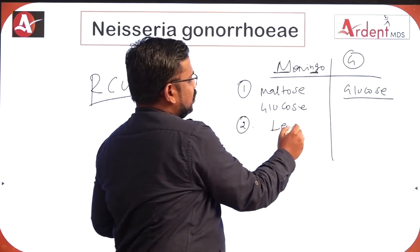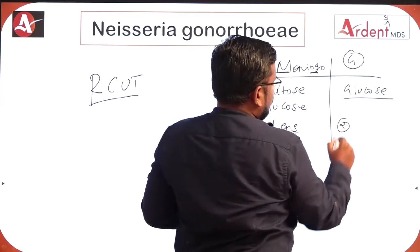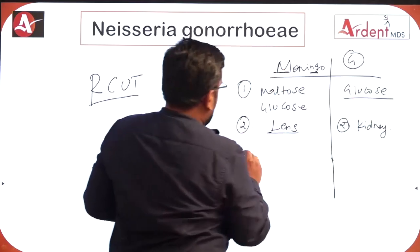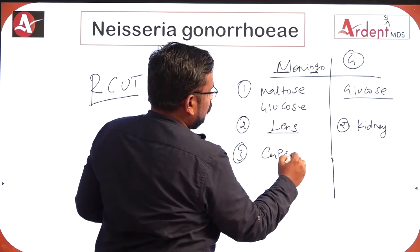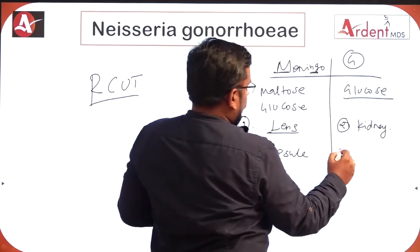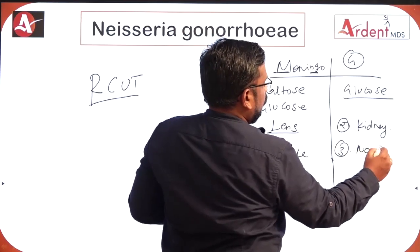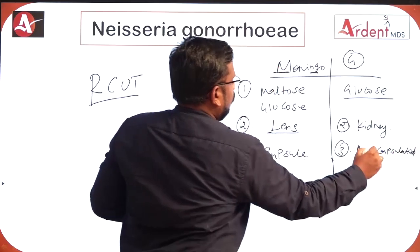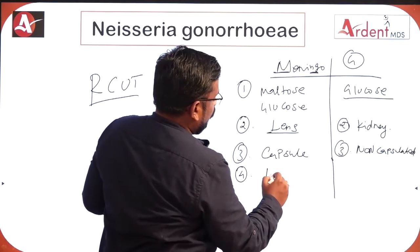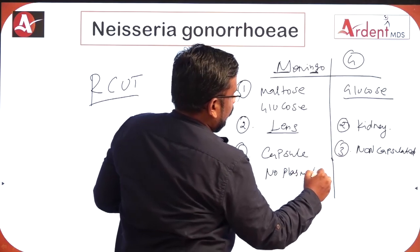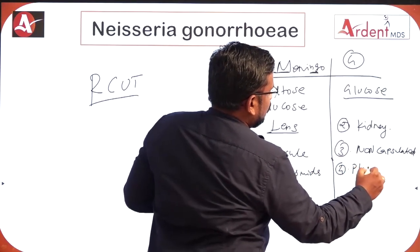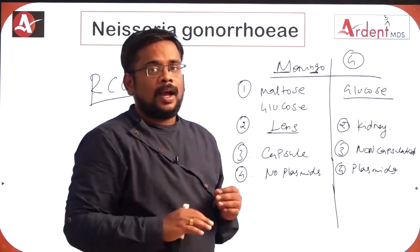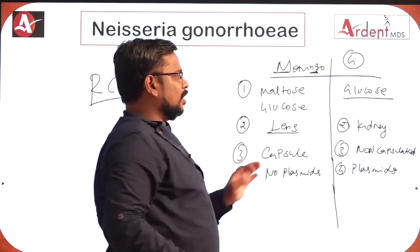Regarding shape: gonococci is kidney-shaped, meningococci is lens-shaped. Meningococci has a capsule, while gonococci is non-capsulated. Meningococci has no plasmids, but gonococci has plasmids, which are responsible for the resistance mechanism of gonococci to antibiotics.